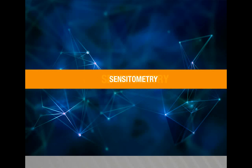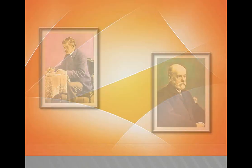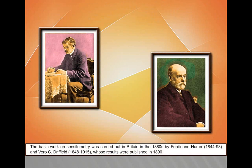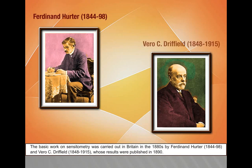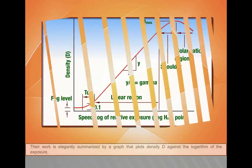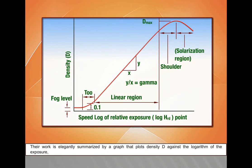Sensitometry. The basic work on sensitometry was carried out in Britain in the 1880s by Ferdinand Hurter (1844–98) and Vero C. Driffield (1848–1915), whose results were published in 1890. Their work is elegantly summarized by a graph that plots density D against the logarithm of the exposure log H. This is variously known as the D/log H curve (formerly D/log E curve), the H&D curve from their initials, and the characteristic curve.